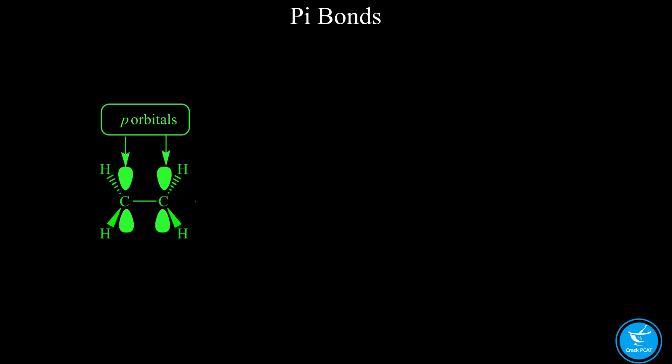As you can see here, a pi bond has two orbital lobes, extending above and below the horizontal plane of the sigma bond.